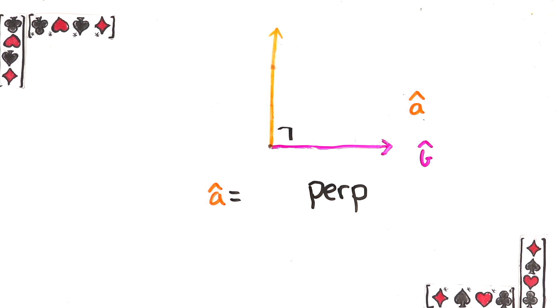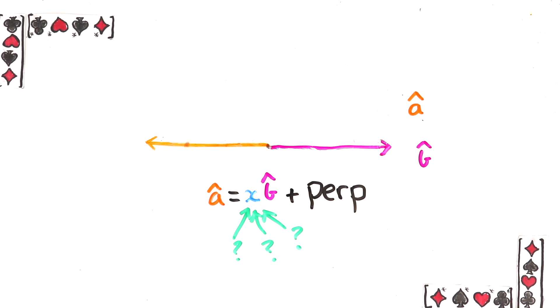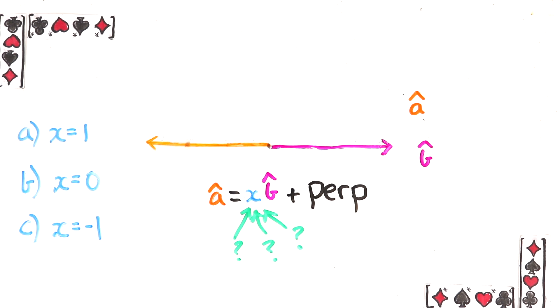But do you think that the number should get higher or lower if we keep rotating? Hopefully you said lower since they're pointing even less in the same direction. But to check you get it here's a question. Suppose that a and b are pointing in exactly opposite directions. What is x in this case? Here are the options and I'd like you to actually pause the video and put your answer in the poll.